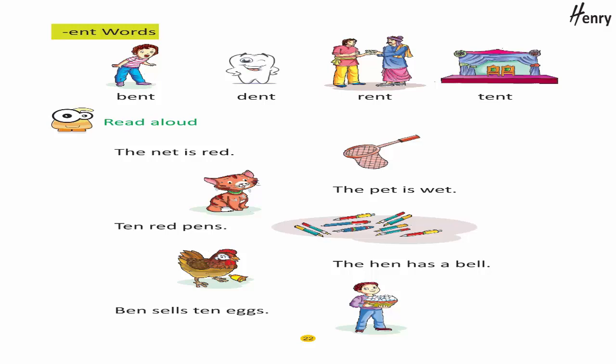Read aloud: The net is red. The pet is wet. Ten red pens. The hen has a bill. Ben sells ten eggs.